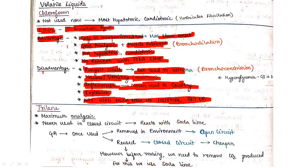Trichloroethylene has maximum anesthetic power and will never be used in closed circuit because it reacts with soda lime. Ether can be used in closed circuit but drugs which react with soda lime will not be used in closed circuit.